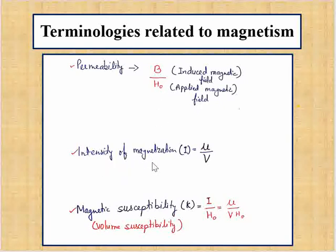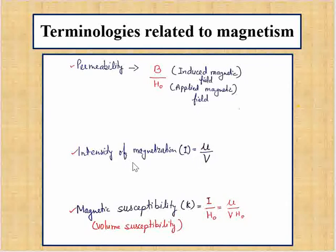The next term is intensity of magnetization, represented by I. Here mu is the magnetic moment, so intensity of magnetization is the magnetic moment per unit volume.